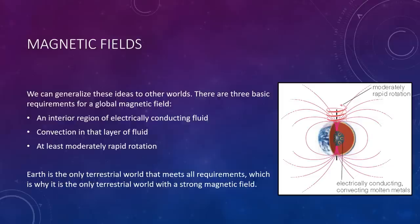We can generalize these ideas into other worlds. There are three basic requirements for a global magnetic field. First, an interior region of electrically conducting fluid—liquid or gas—such as molten metal. You need a region of some kind of liquid or gaseous metal. Convection in that layer of fluid must also occur, so it needs to be moving. And we also need a moderately rapid rotation. Just the convection alone isn't going to generate that magnetic field. We need that twisting and distorting caused by the rotation as well. So, Earth is the only terrestrial world that meets all three requirements, which is why it is the only terrestrial world with a strong magnetic field.